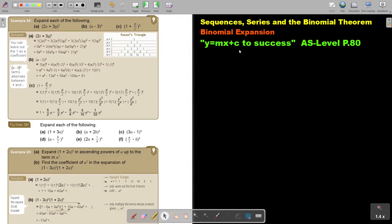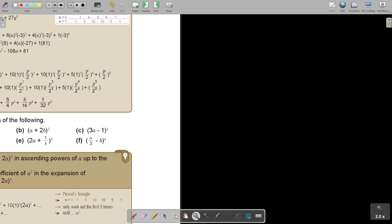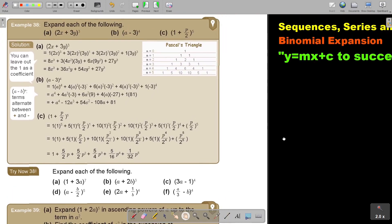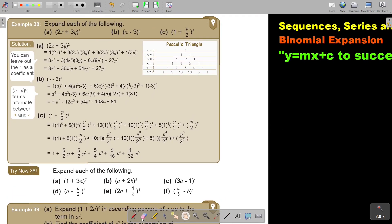In this video we are going to continue with binomial expansion. You will find this on page 80 in the Namibia AS level mathematics textbook Y equals MX plus C to success. Expand each of the following. Now let's start, I'm going to make it a bit bigger so you can see all the small numbers. Okay, now what is different about this example is that I put now a 2 or a 3, not just 1 and 1, but the principle stays the same.